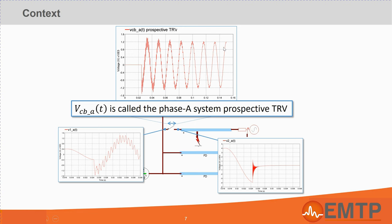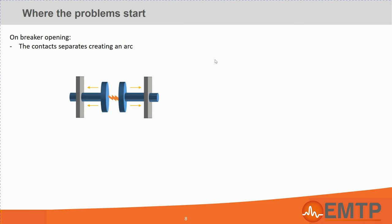During TRV analysis, the system voltage across the circuit breaker is called the prospective TRV. Okay, so far so good. So what is the big deal out of it? The deal is, can the breaker achieve the current interruption?